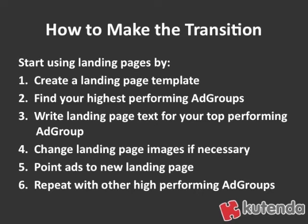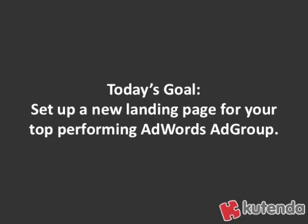And finally, go through and repeat with all of your other high performing ad groups, working your way through the account, eventually getting to the point where you're pointing all of your ads to landing pages. When you create new ones, make sure you're also remembering to create landing pages for them. Today's goal is to set up a new landing page for your top performing AdWords ad group, and going forward, maybe set aside 15 minutes or so to write text for each of your other ad groups throughout the week.